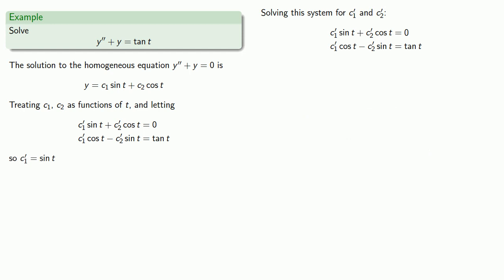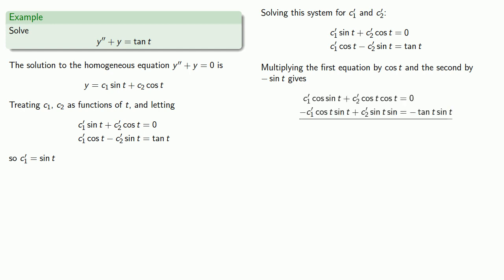Well that worked out so well. Let's do it again. This time we'll multiply the first equation by cosine t and the second by minus sine of t. If we add them and then simplify, which gives us c2 prime.